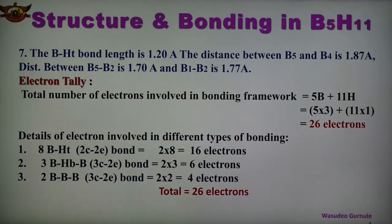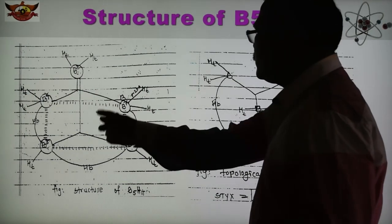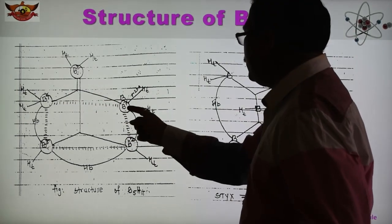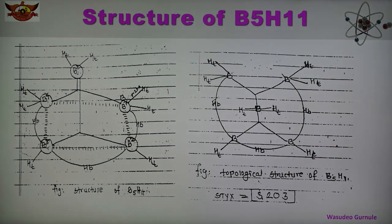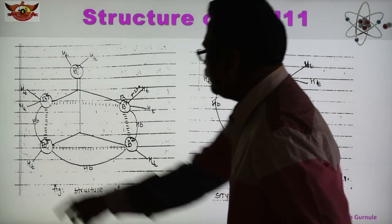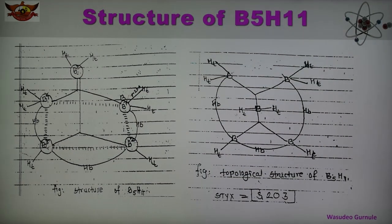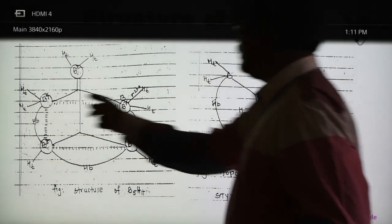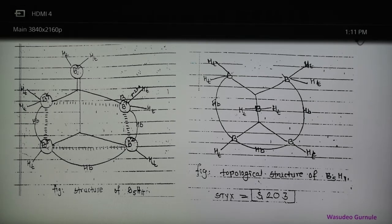The boron-terminal hydrogen bond length is 1.20 angstrom units. The distance between B5 and B4 is 1.87 angstrom units, between B5 and B2 is 1.70 angstrom, and B1 is 1.77 angstrom. The structure shows B1, B2, B3, B4, B5 with terminal hydrogens. There are BH2 groups — three BH2 groups are present. B1, B2, B3, B4 are arranged in a square, and B5 is at the upper apex of this structure.